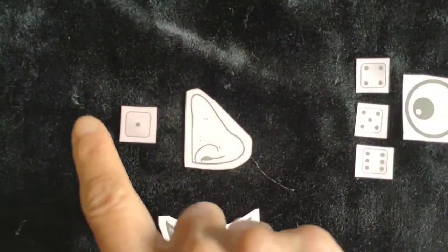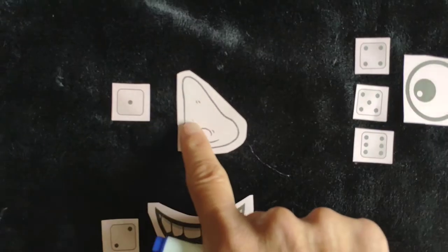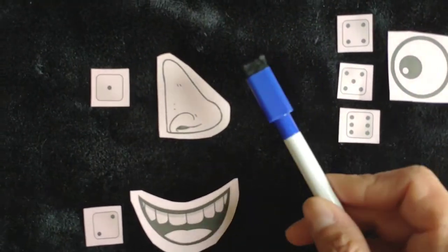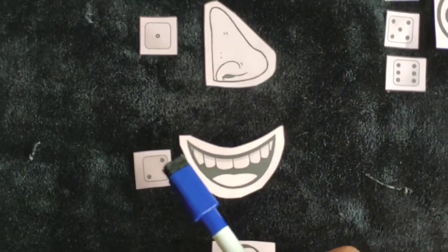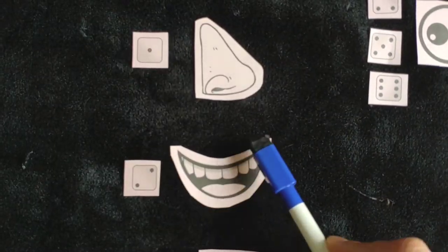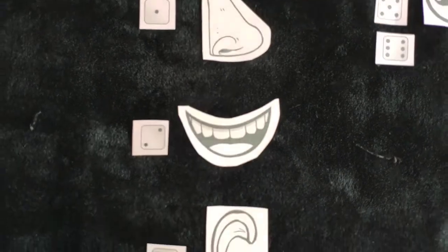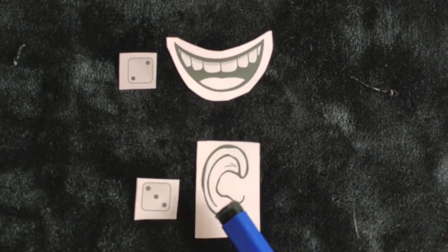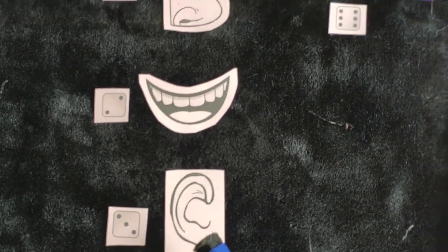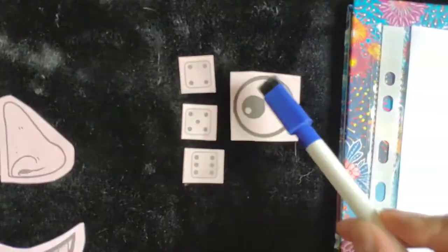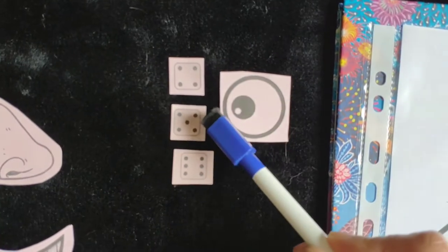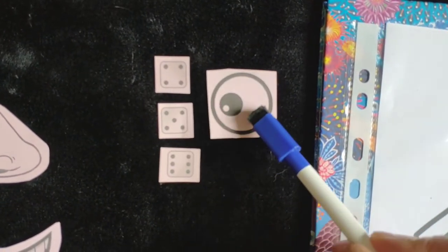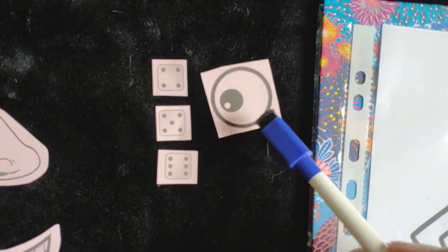If you get one, then you draw one nose. If you get two, then you draw two mouths. If you get three, then you draw three ears. If you get four, five, or six, then you draw eyes.